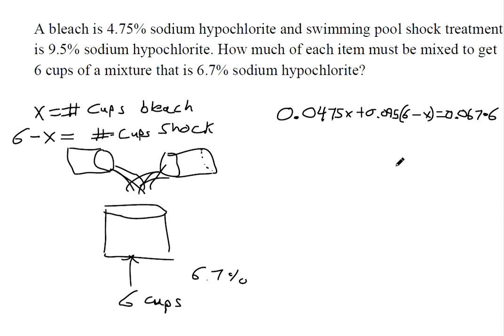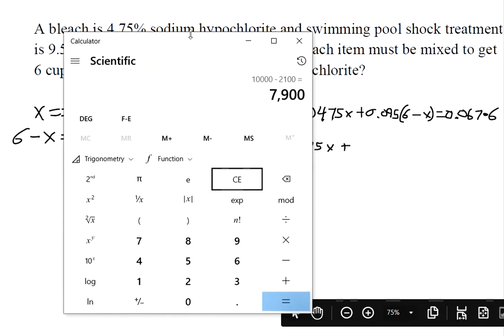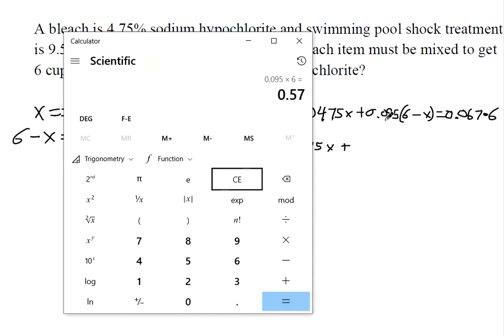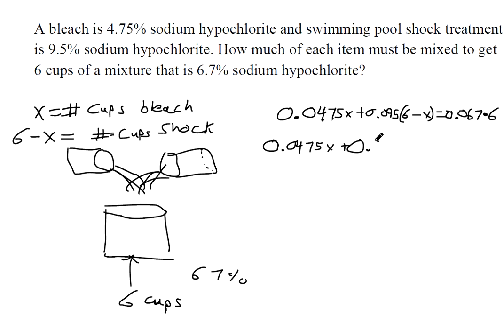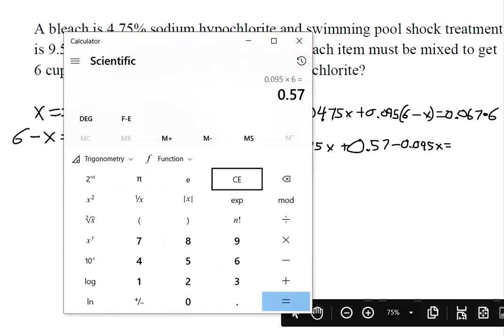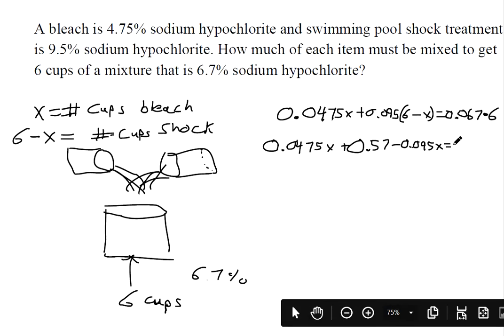We have to use the distributive property with 0.095, so I'm multiplying 0.095 times 6. Then over here is 0.067 times 6, that makes 0.402.